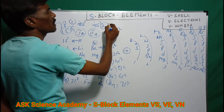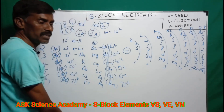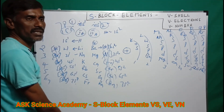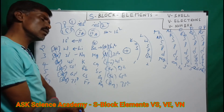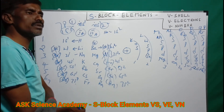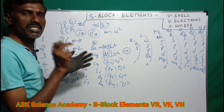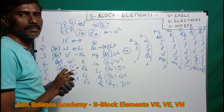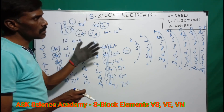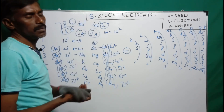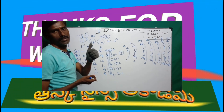Let's see the general valency number. For Group 1, valence electrons = 1, so valency = 1. For Group 2, valence electrons = 2, so valency = 2. So we have covered valence shells, valence electrons, and valency number for S-block elements. Thank you.